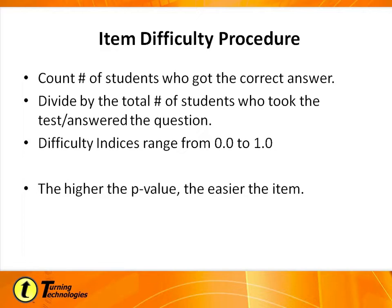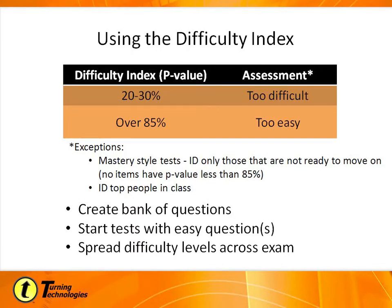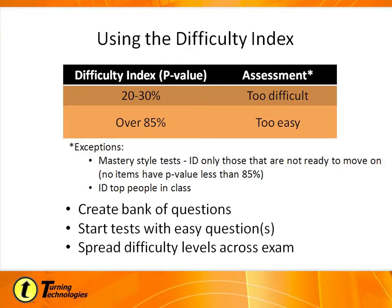Here are some general rules of thumb for difficulty index numbers. If it's 20 to 30 percent, it's probably a little too difficult. If it's over 85 percent, it's probably too easy. There are exceptions — if you're doing a mastery style test to identify only those students ready to move on, you may want no items with a p-value less than .85. Or you may want to identify the top people in the class. So there are obviously exceptions to the rule.